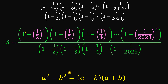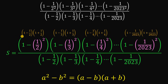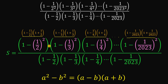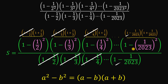We can apply the factored form of the difference of two squares: a minus b multiplied by a plus b. So the numerator factors as 1 minus 1 half times 1 plus 1 half, 1 minus 1 third times 1 plus 1 third, 1 minus 1 fourth times 1 plus 1 fourth, all the way down to 1 minus 1 over 2023 times 1 plus 1 over 2023. We can now eliminate the common factors: 1 minus 1 half, 1 minus 1 third, 1 minus 1 fourth, all the way down to 1 minus 1 over 2023, canceling with those same factors in the denominator.